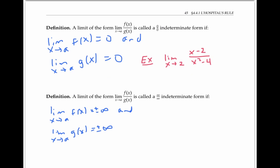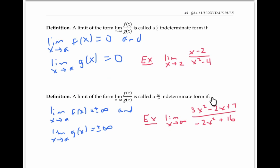A limit is called an infinity over infinity indeterminate form if the limit as x goes to a of f of x is equal to infinity or minus infinity, and the limit as x goes to a of g of x is also equal to infinity or minus infinity. One example is the limit as x goes to infinity of 3x squared minus 2x plus 7 divided by negative 2x squared plus 16. Notice that as x goes to infinity, the numerator goes to infinity while the denominator goes to negative infinity. In these definitions, a can be negative infinity or infinity, but it doesn't have to be.